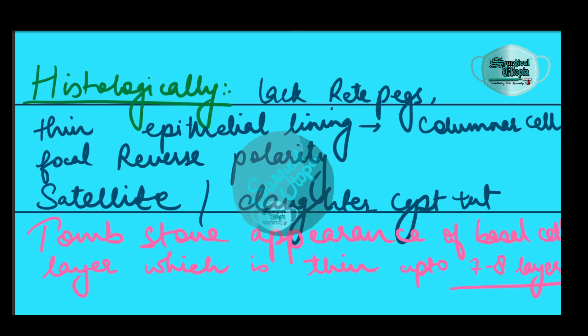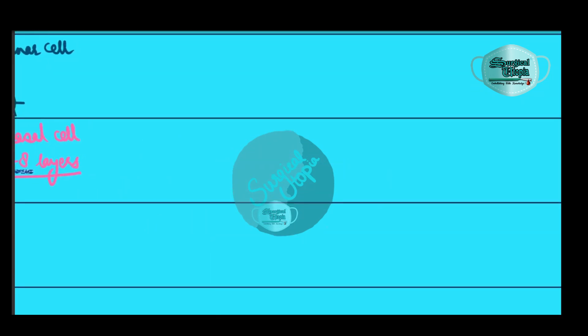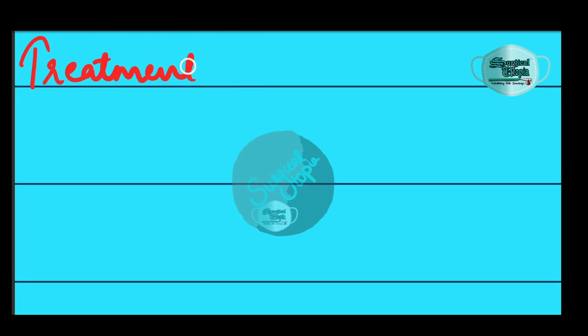Histologically, the OKC will have a thin basement membrane — around seven to eight cell layers — with columnar cells and reverse polarity of the basal layer. Reverse polarity means the nuclei are present on the opposite pole of the cell. The rete ridges or rete pegs will be absent, satellite cells will be present, and the basement membrane will give a tombstone appearance.